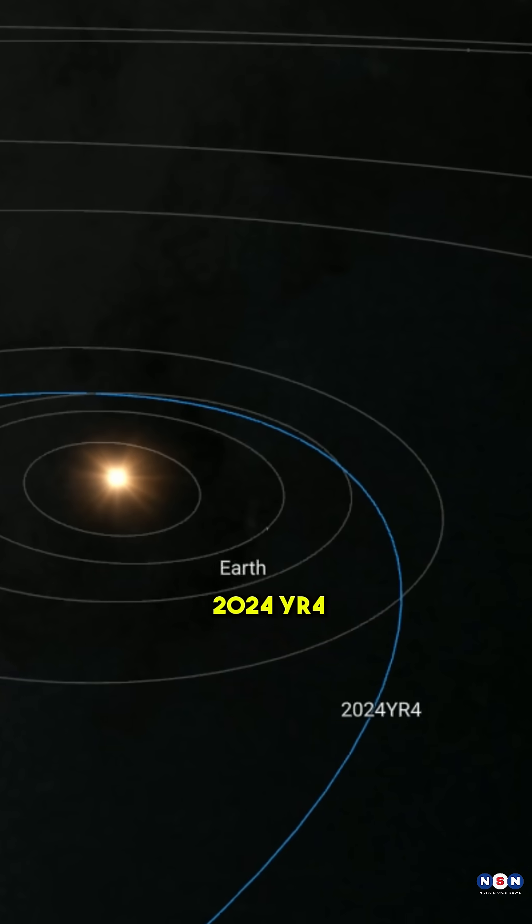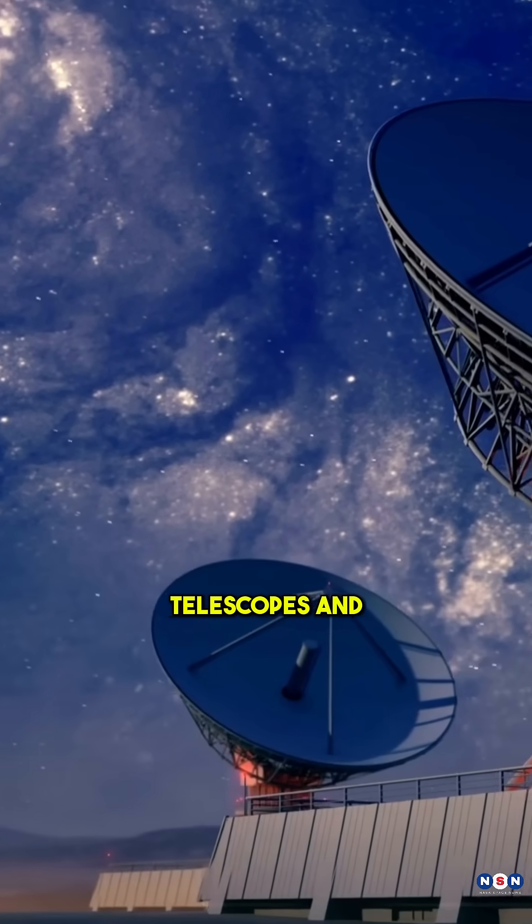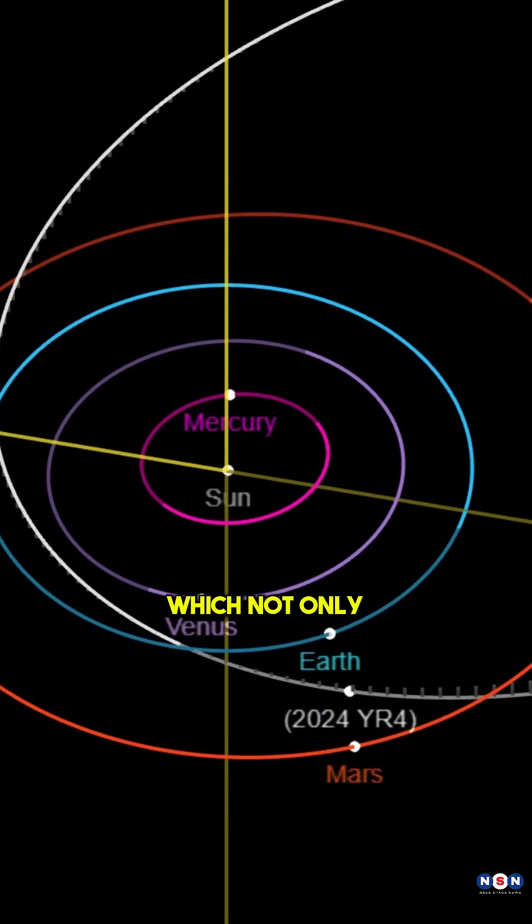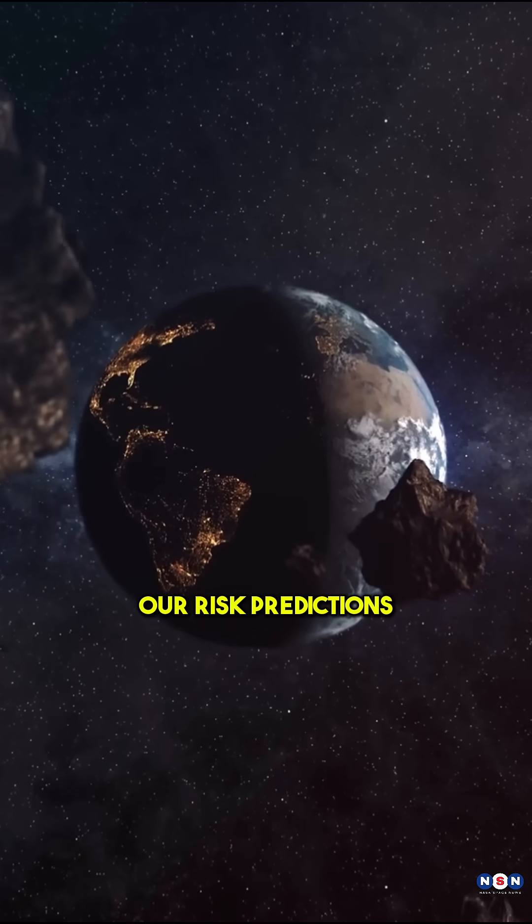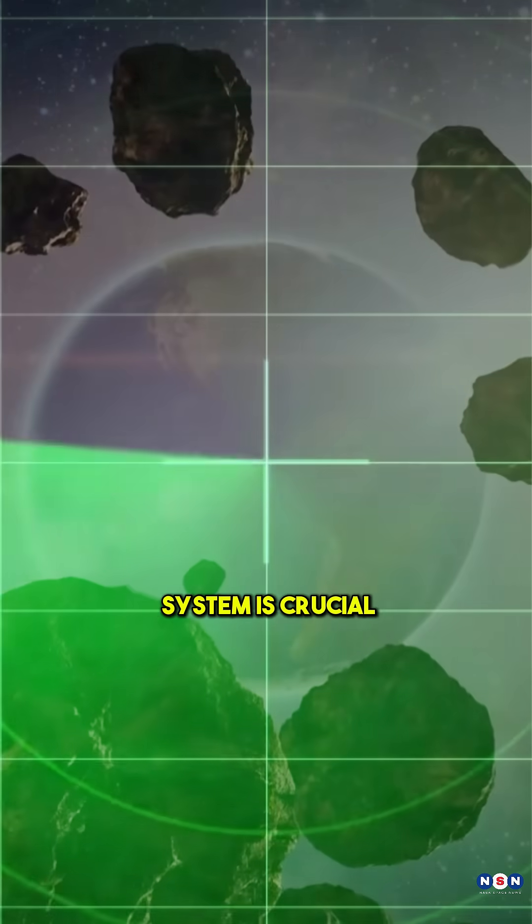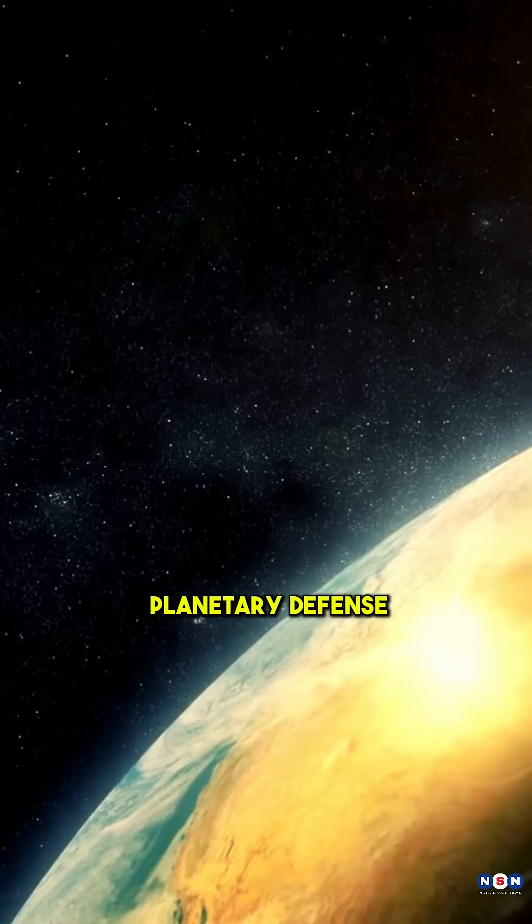Scientists monitored 2024 YR4 using a powerful global network of telescopes and radar systems, which not only track its orbit, but also help improve our risk predictions. This robust monitoring system is crucial because even the smallest threat demands attention when it comes to planetary defense.